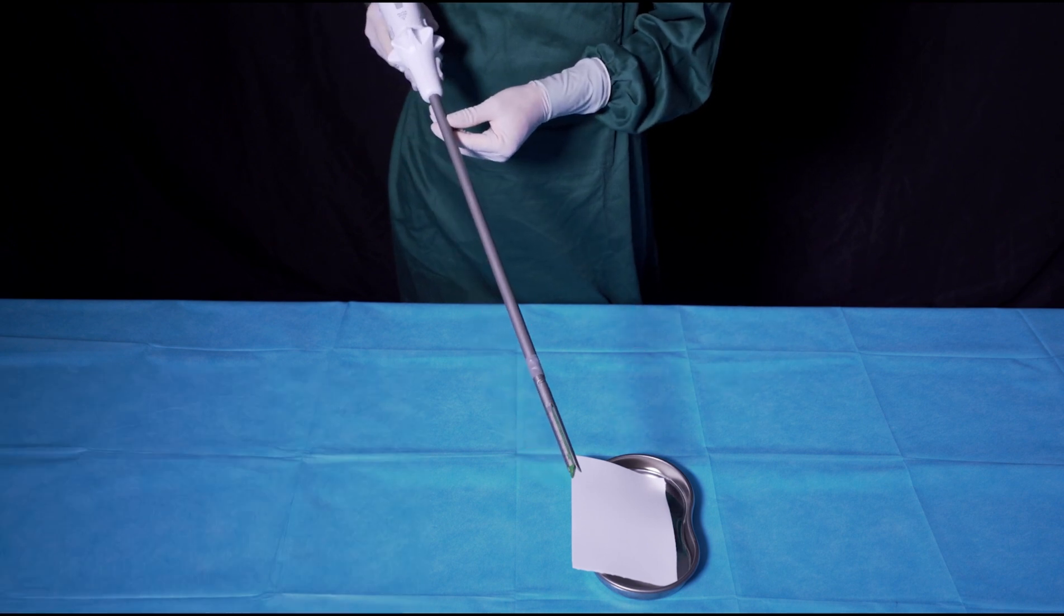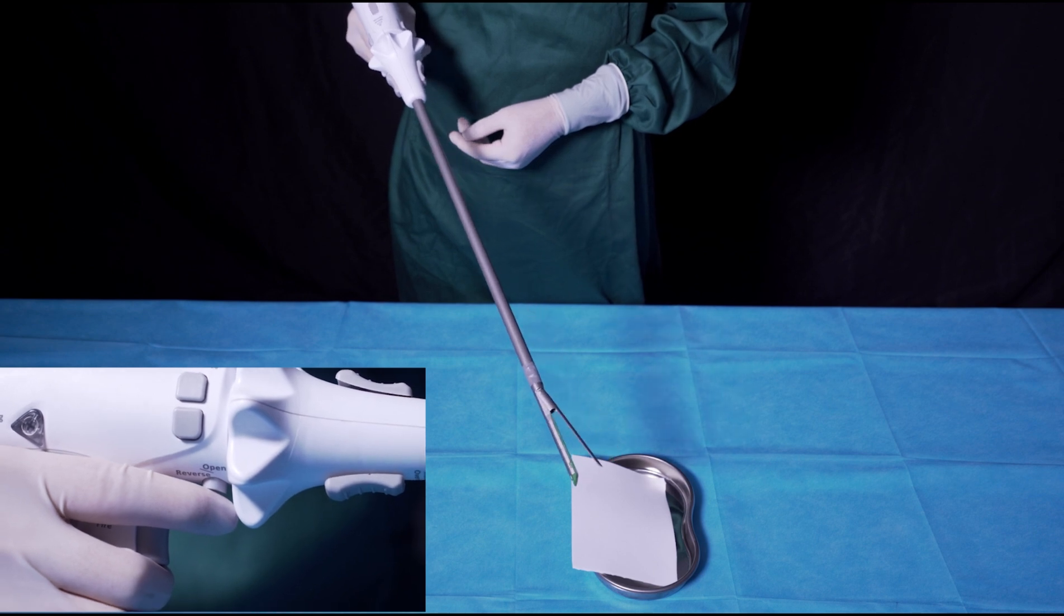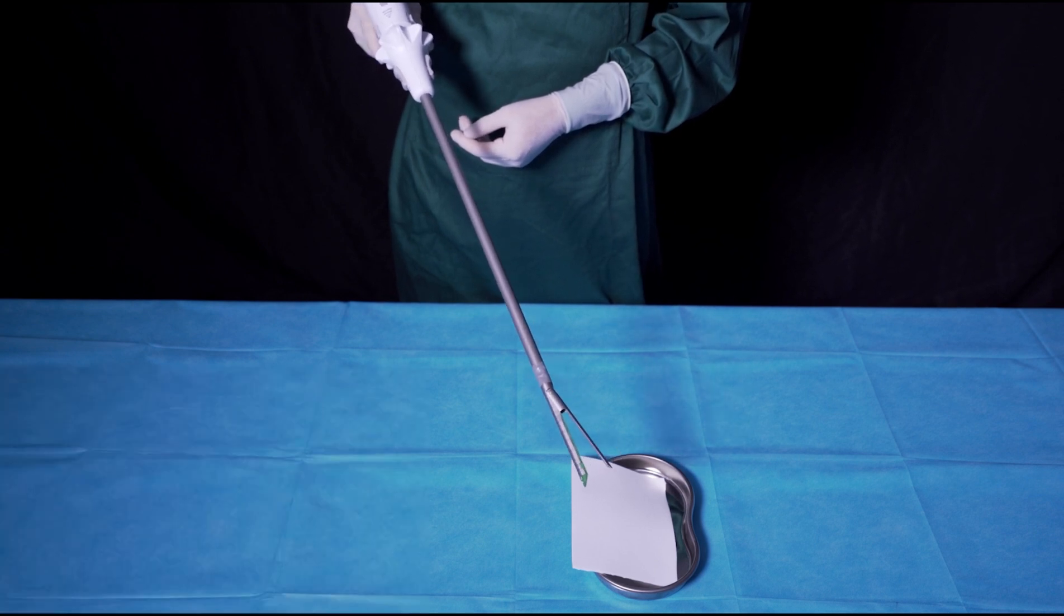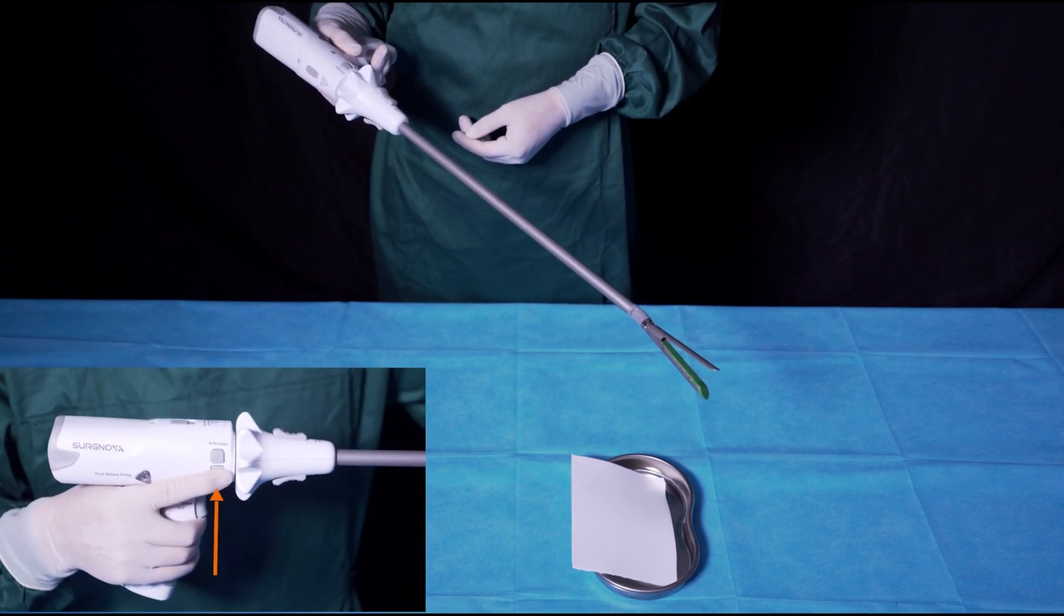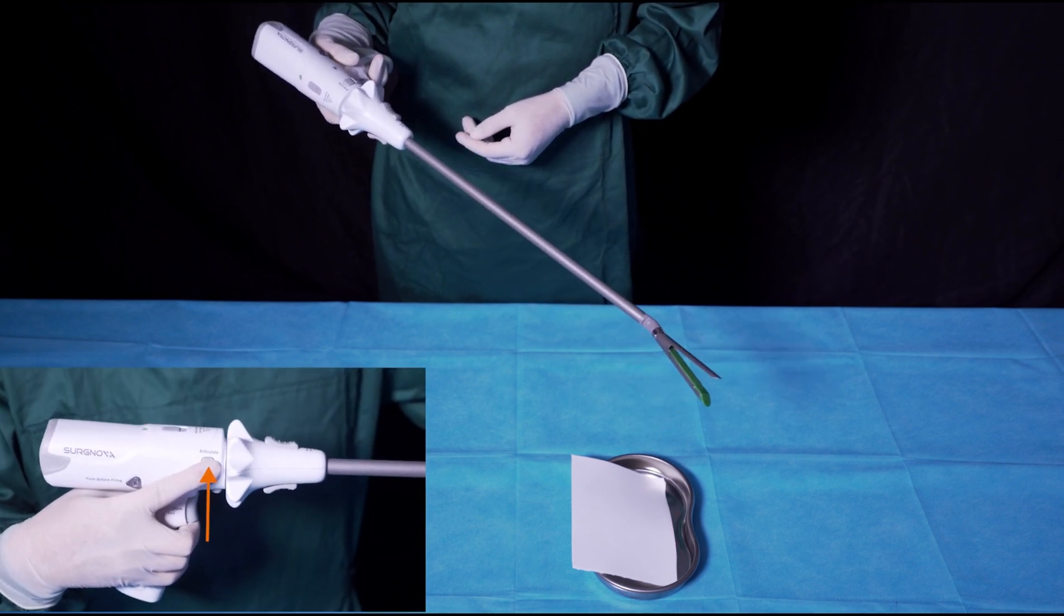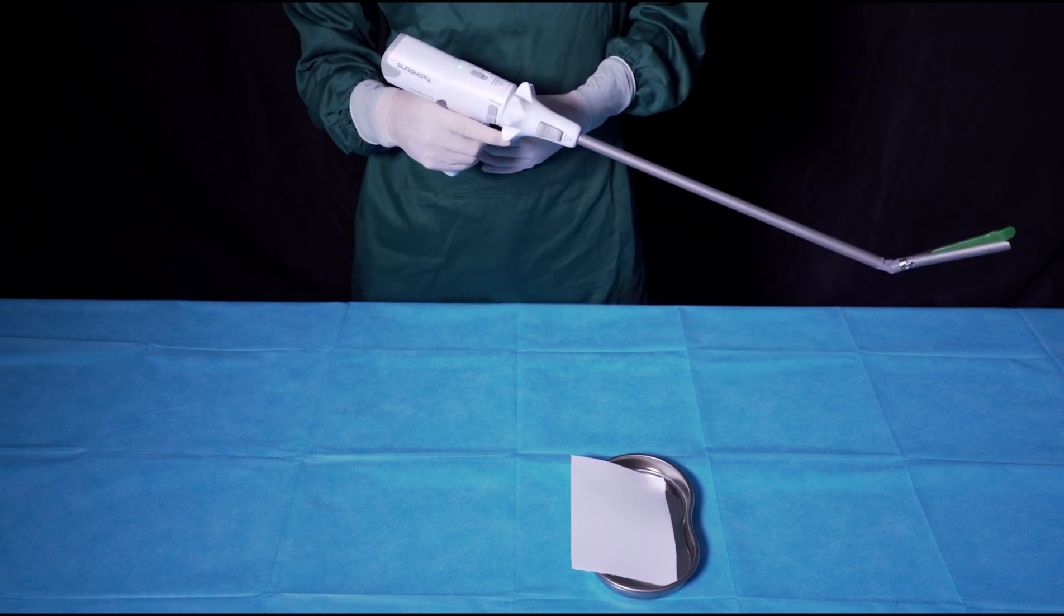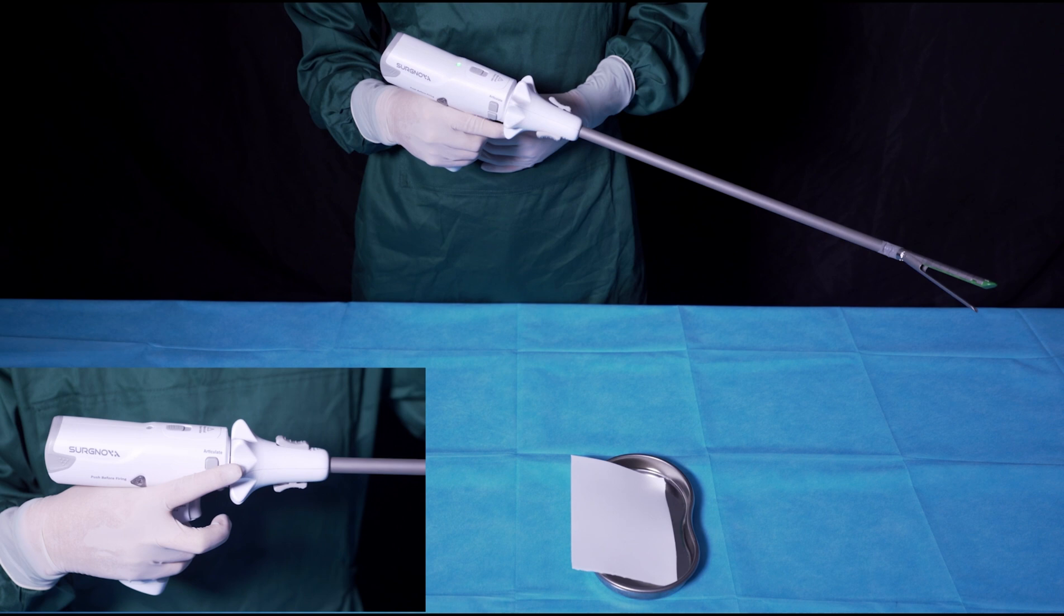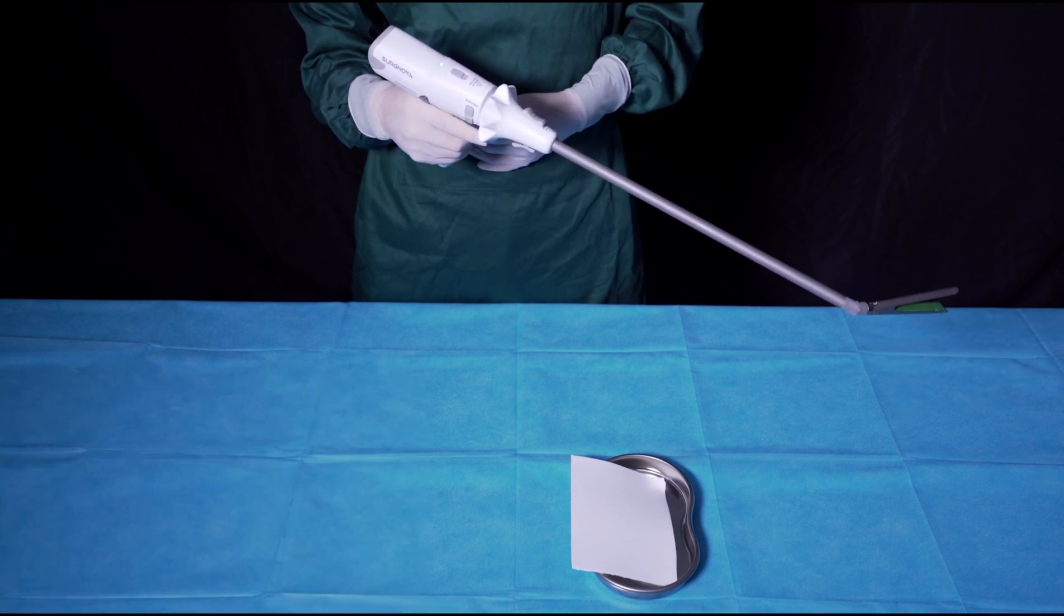After entering the body cavity, press the open button to open the jaws. The deflection button can be triggered to adjust the articulation angle as needed. The jaws can articulate from 0 degrees to 45 degrees to the left or right. If necessary, use the index finger to adjust the rotary joint. The shaft will rotate freely in any direction.